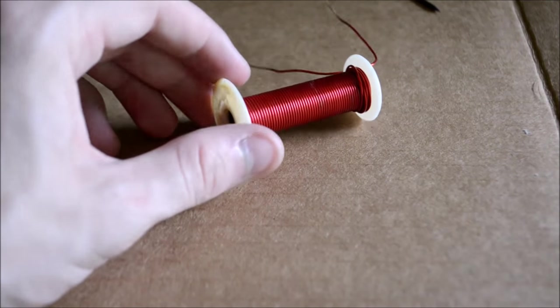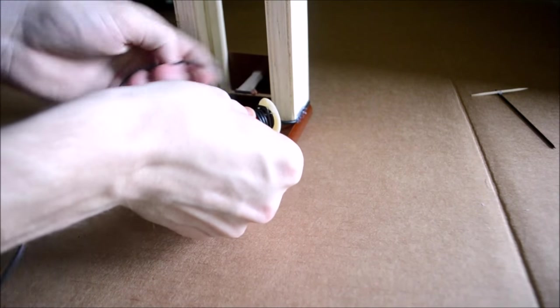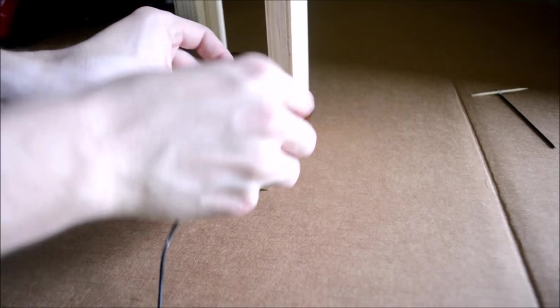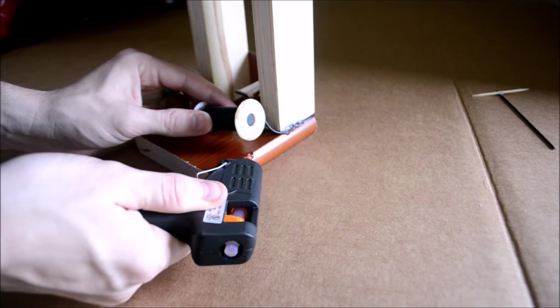The transformer is made from a spool of wire that I had. I simply wrap the wire which is connected to the lead contact around the spool of wire. Next I glue the transformer in place.